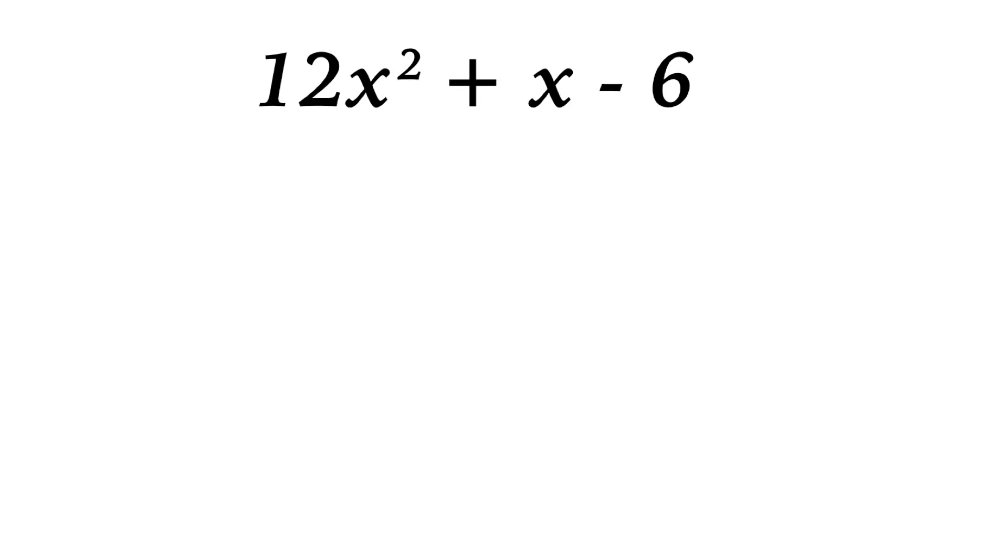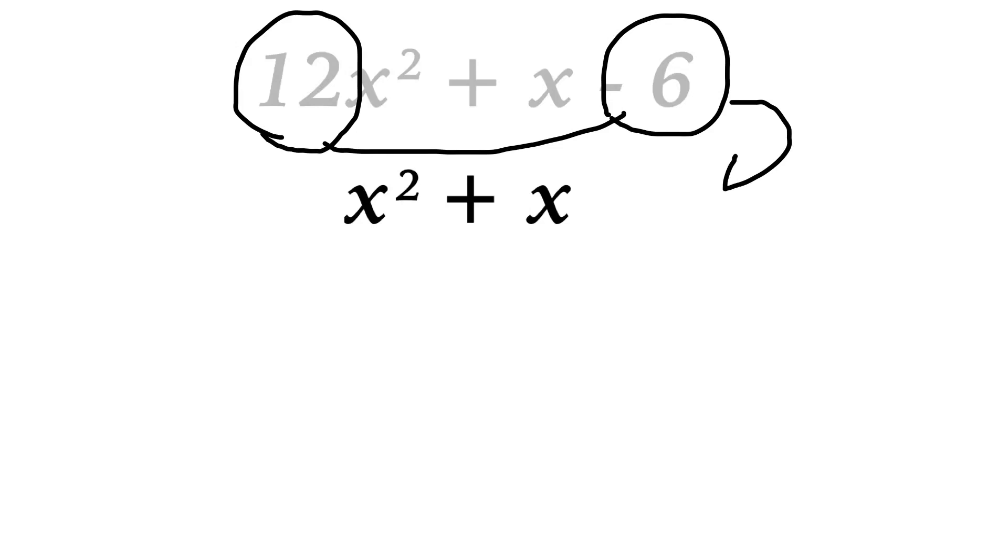So I'm going to show you a technique that utilizes this coefficient of 1, and we'll start by just forgetting about that 12 completely. Let's just rewrite this as x squared plus x. And at this point, we'll consider the 12 and the minus 6. We'll multiply those together and get negative 72.